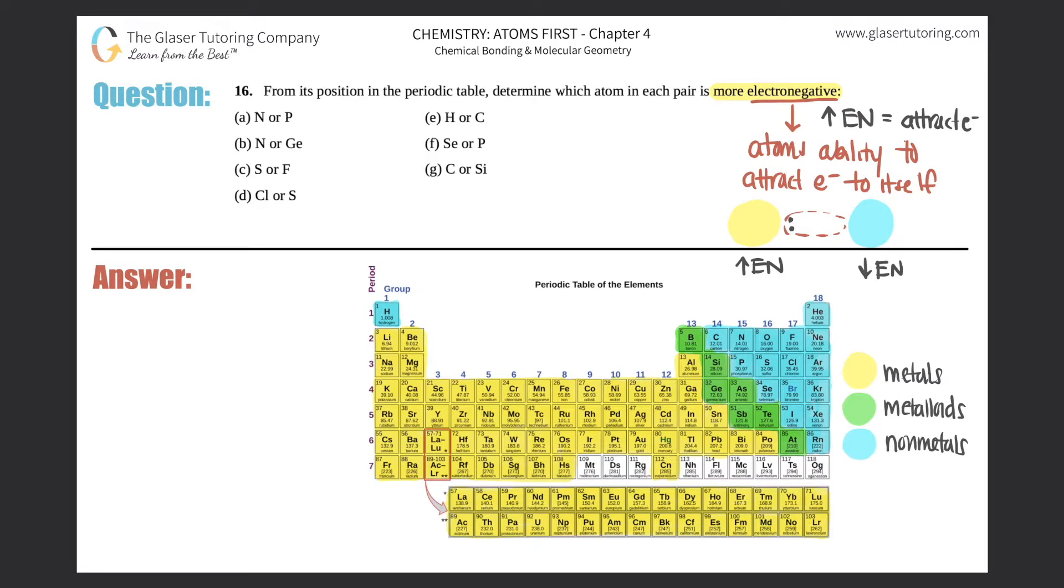So the higher the electronegativity an atom has, the more greedy it will get basically, and it will pull, it will attract the electrons closer to itself. If they had basically the same number of electronegativity, right, if their electronegativities were the same, the electrons would then be shared 50-50. And that's what a nonpolar covalent bond is. And that's what nonpolar covalent compounds are.